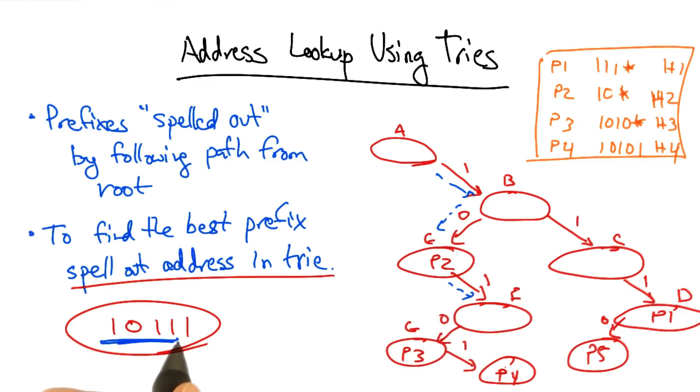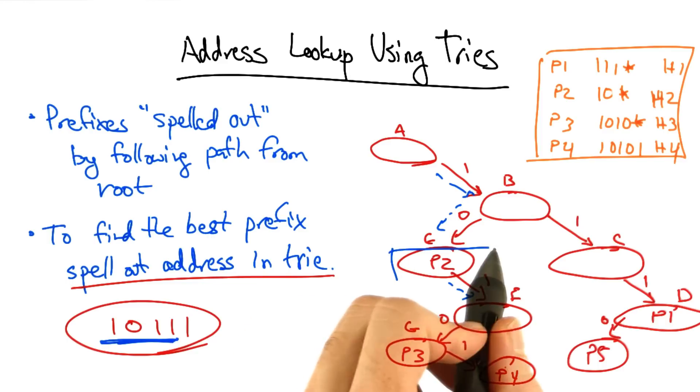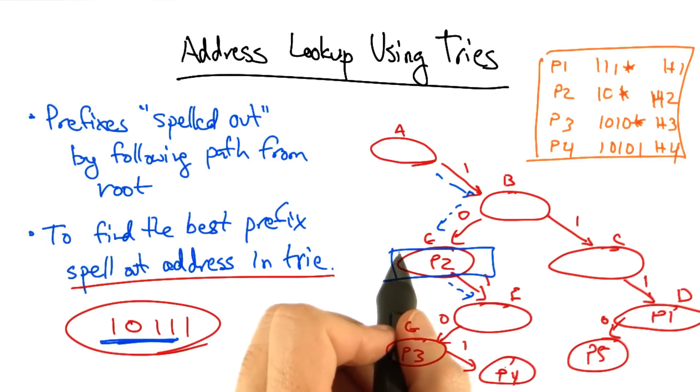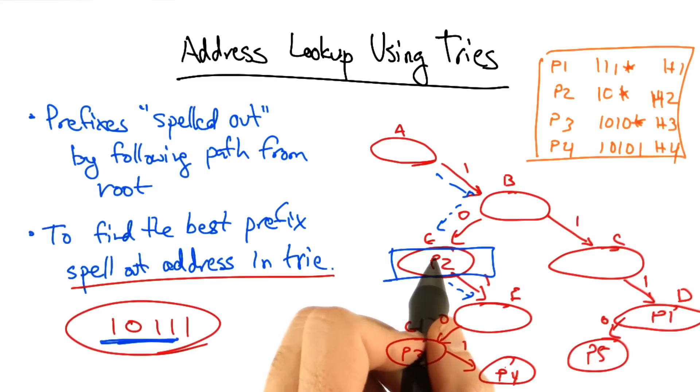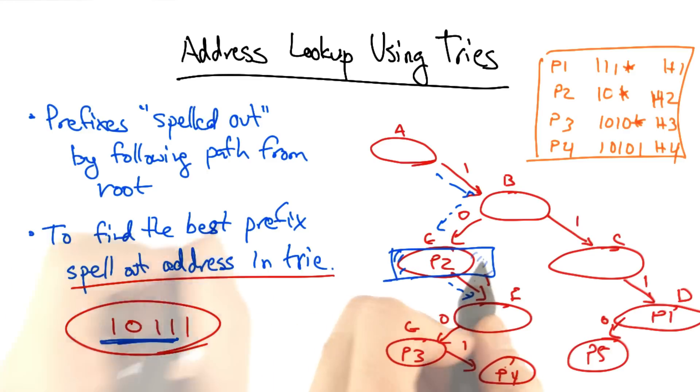and now we see that there's no entry for 1 0 1 1. So we use the entry of the last node in the tree that we traverse that has an entry. In this case, P2.